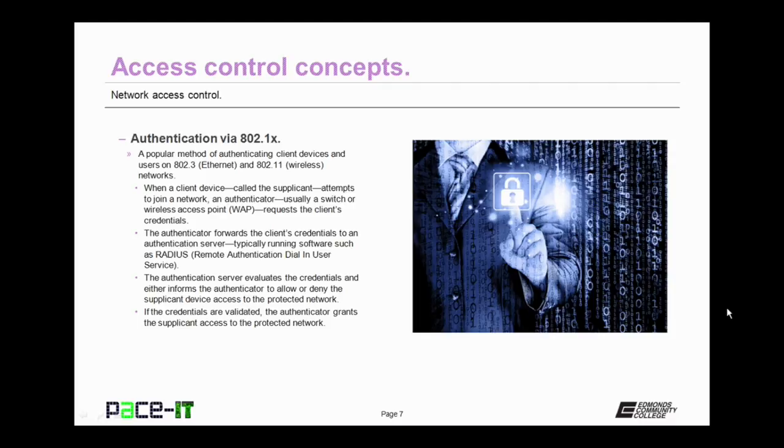The authenticator then forwards the client's credentials to an authentication server, or AS, which is typically running software such as Remote Authentication Dial-In User Service, or RADIUS. The authentication server evaluates the credentials and either informs the authenticator to allow or deny the supplicant device access to the protected network. If the credentials are validated, the authenticator grants the supplicant access to the protected network. 802.1x is very popular in enterprise type networks.